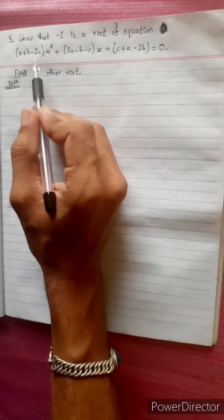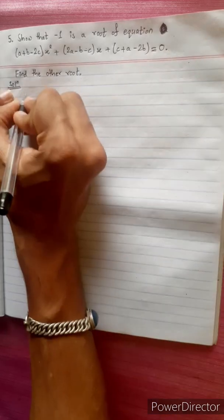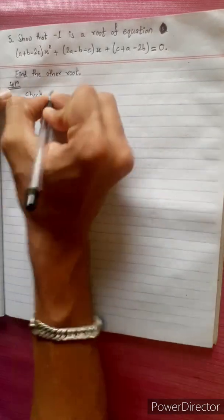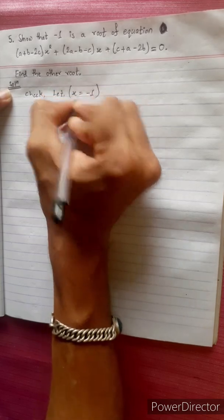So that minus 1 is a root of equation. You equation ma minus 1 ka value aya wane. Value aala kheri 0 aungu parcha. Chak garoom. Let x equals to minus 1. Yoy value aali mao.